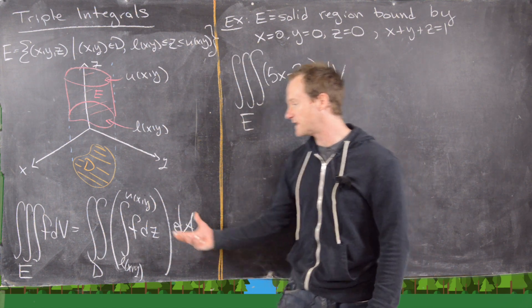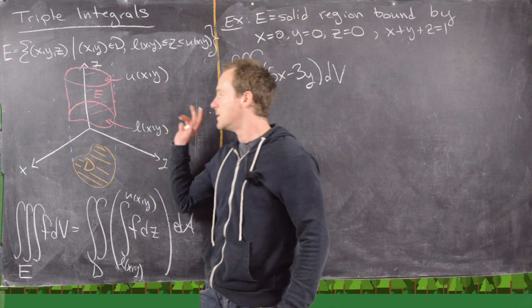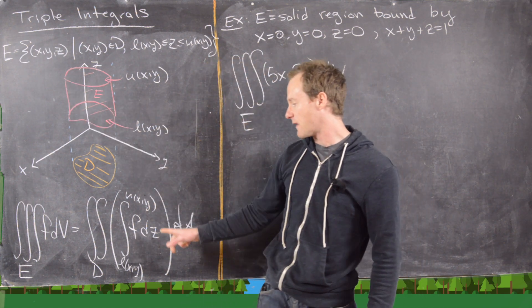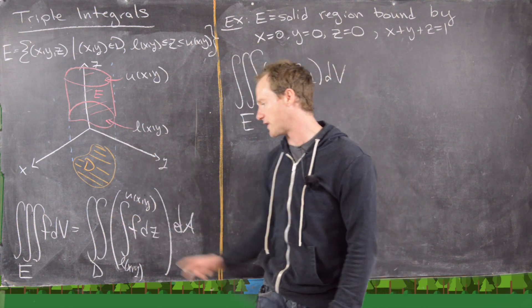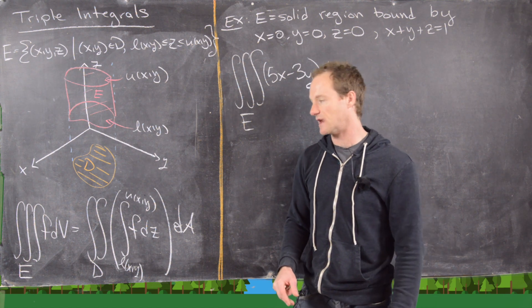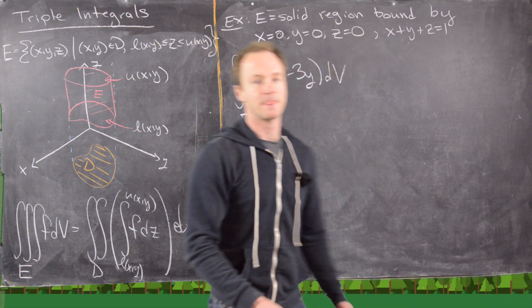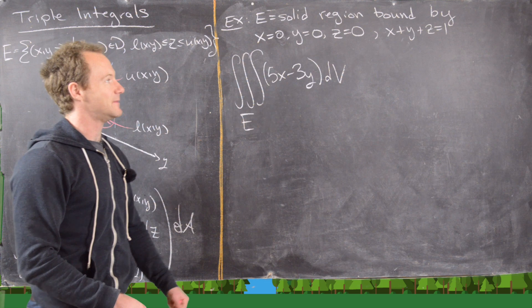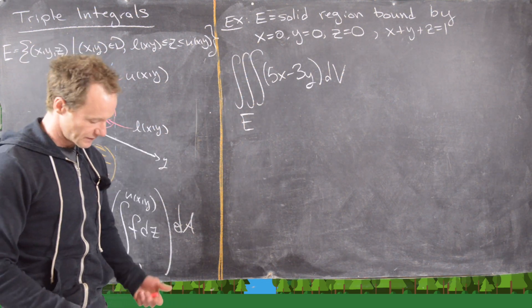This could happen in any direction. We could make the shadow onto the x, z plane, and that would make the inner integral with respect to y, and then the outer integral would be with respect to x and z. We'll see an example of something like that later in this video. So this first example: let E be the solid region bounded by x equals 0, y equals 0, and z equals 0.